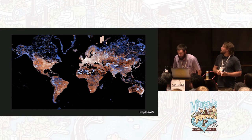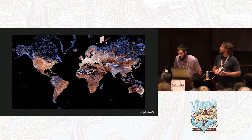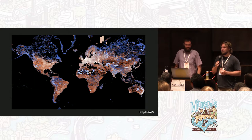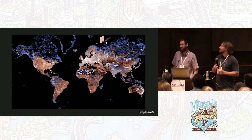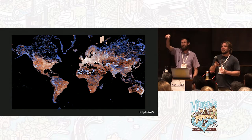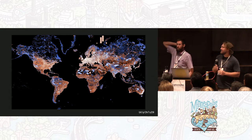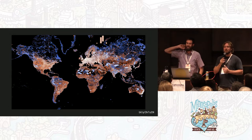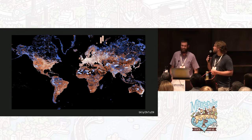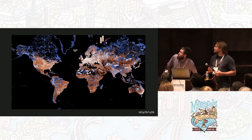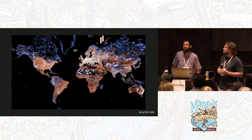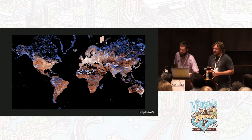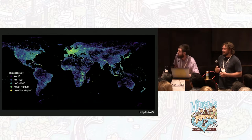Anyone see the rectangles up there in the northwest? Nuclear waste sites. So if you didn't think that OSM had everything in it, it does. I really thought it was an error at first, but no — they're there, you can find them.